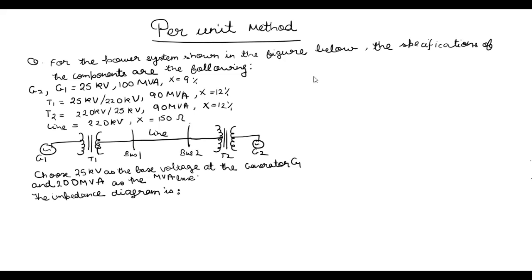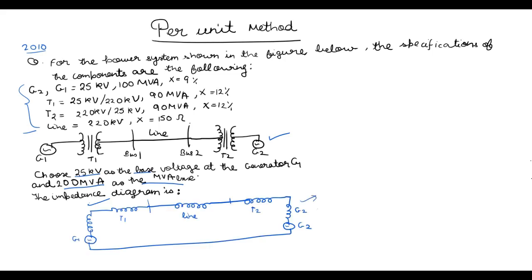Now let's take another example from GATE 2010. This is the power system shown along with its specifications. We have to choose 25 kV as the base voltage and then draw the impedance diagram. Starting from G1, it is on base 25 kV and 100 MVA. The base voltage is the same, so we only need to change the base MVA.